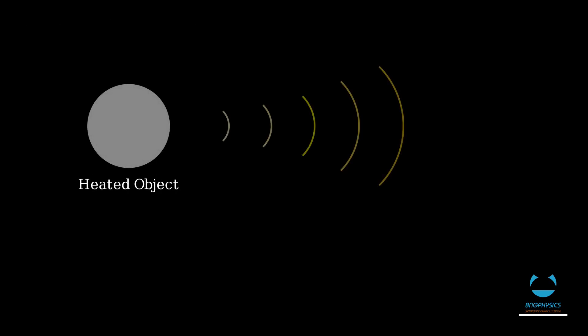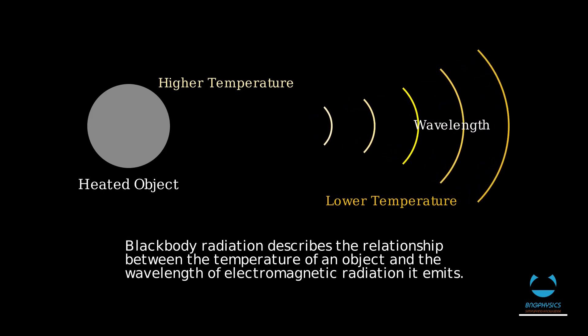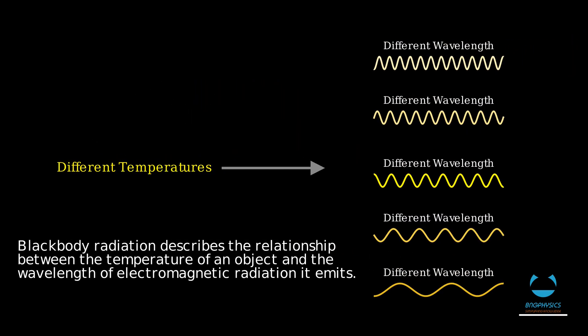For those who are not familiar with black body radiation, the term simply describes the relationship between the temperature of an object and the wavelengths of electromagnetic radiation it emits. The more the object gets heated, the more it radiates heat energy to the surroundings. This heat energy is transferred by waves, whose wavelengths and frequencies depend on the object's temperature.